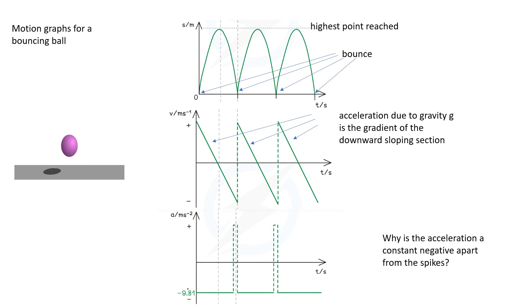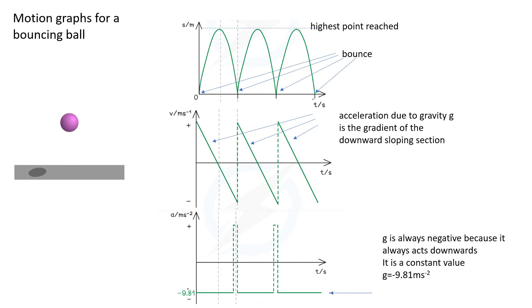So why is the acceleration a constant negative value apart from the spikes? g is always negative because it always acts downwards and it is considered to be a constant value on the surface of the earth, and that is minus 9.81 meters per second squared.